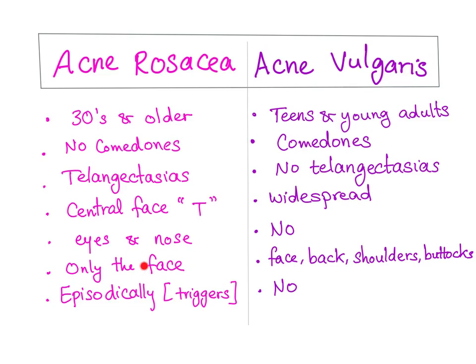Acne rosacea affects only the face. Acne vulgaris can affect face, back, shoulders, and buttocks. Acne rosacea occurs episodically because it's related to triggers; acne vulgaris can come any time. Remember, both of them are chronic inflammatory skin conditions, both are common conditions, and both have redness, red spots, and even cysts.